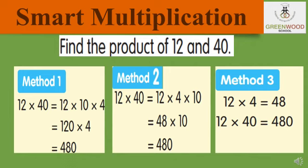Smart Multiplication. Find the product of 12 and 40. Method 1: 12 into 40 — split 40 into 10 into 4. First, 12 into 10 is equal to 120 (12 as it is and 0 from 10). Now 120 into 4: 4 zeros are 0, 4 twos are 8, and 4 ones are 4. So 12 into 40, our answer is 480.